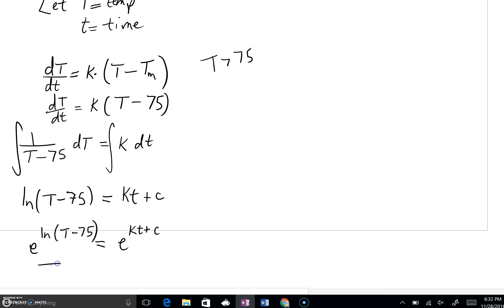And as we exponentiate, take E to the left side, E to this right side. The left side, of course, just becomes T minus 75. E and natural log are inverse functions. On the right side, just as we did at the beginning of the lesson, we can use a property of exponents and say that E to the KT plus C is the same thing as E to the KT times E to the C. Now I'm going to recopy this up here at the top. And in all honesty, we're so close to being done.